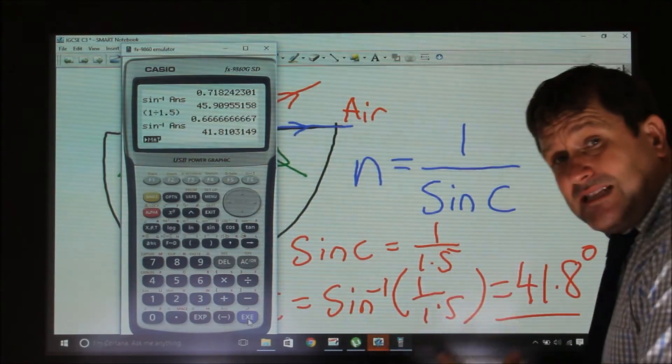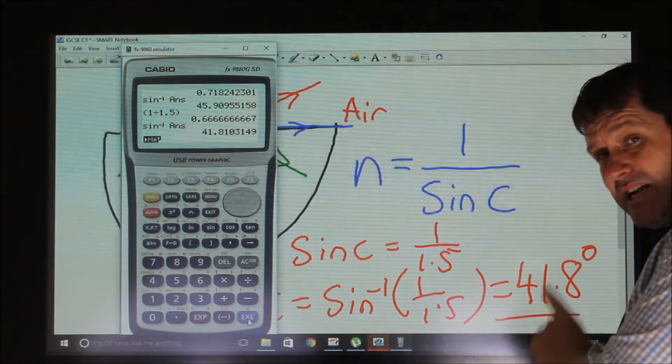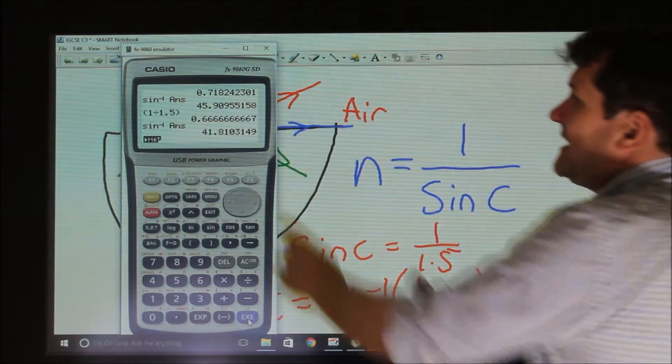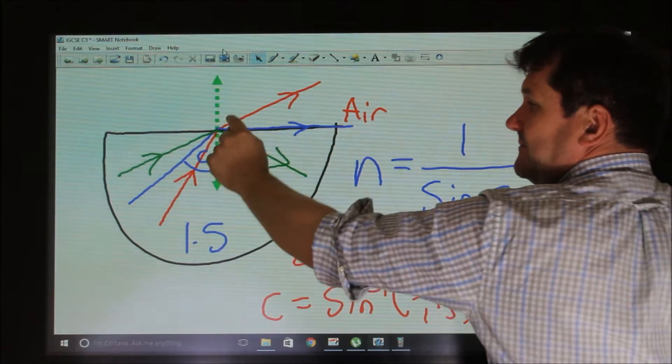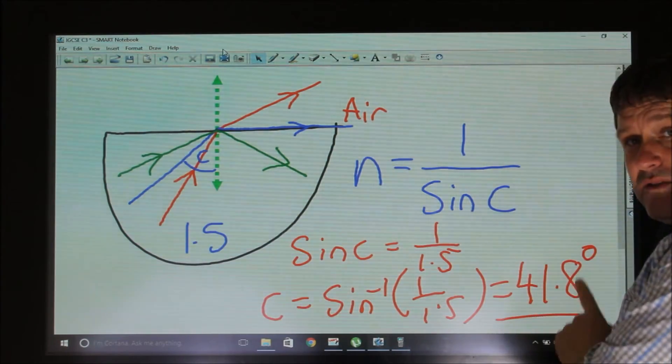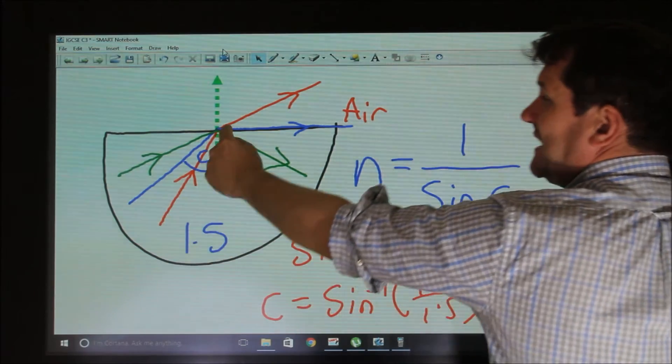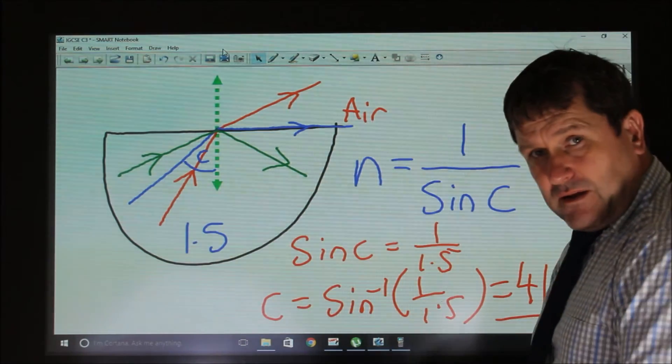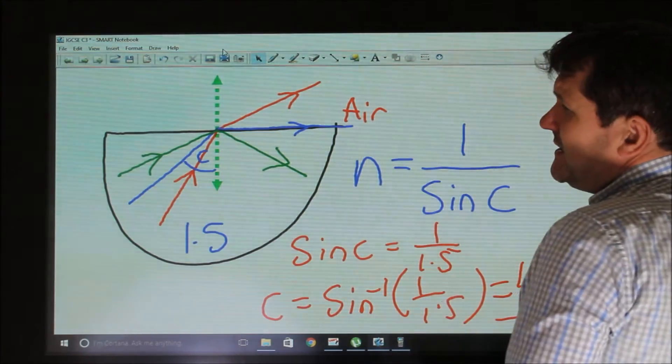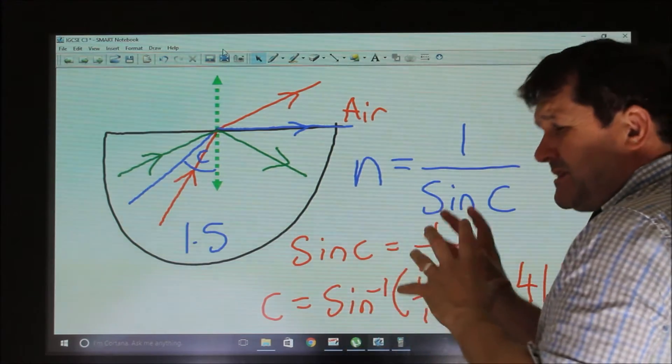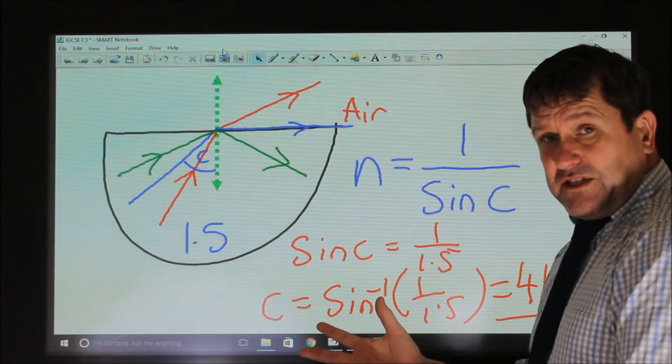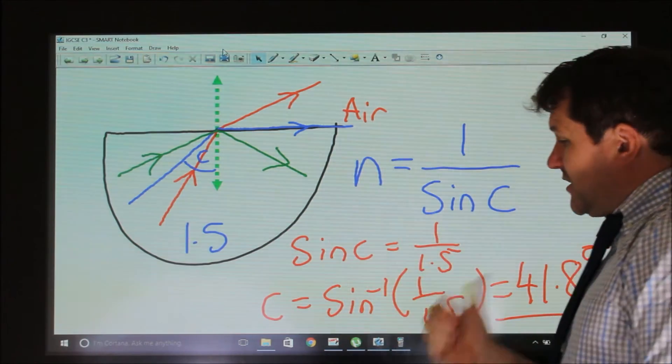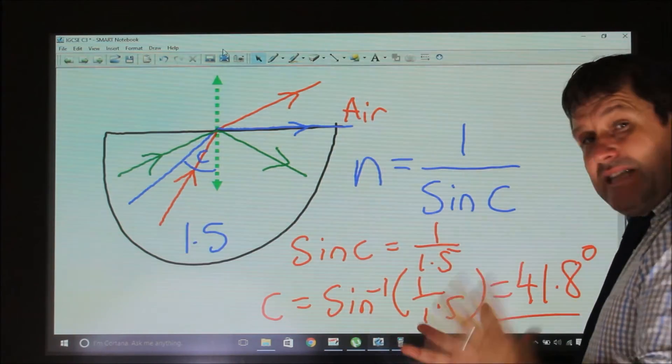And what that means is if the angle is greater than that, you get total internal reflection. If it is equal to that, you get the blue line, and if it is smaller than that, the light will be the red line and it will leave the block. That's the most important thing to remember about refraction: Snell's law and critical angle and total internal reflection.